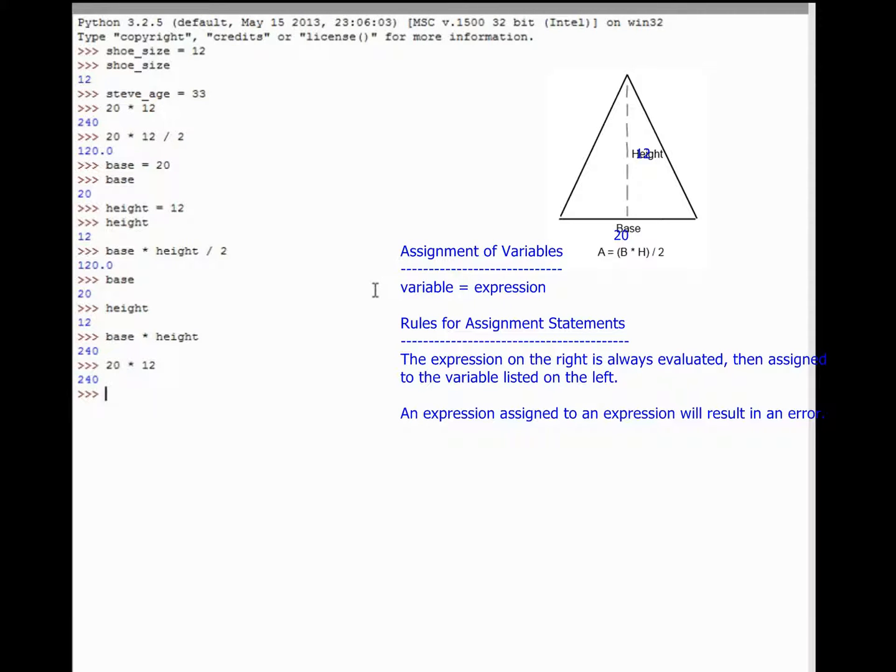What I can do is I can assign the result to a variable as well. I can say that the area of the triangle is equal to the base times the height divided by 2. In this case, Python doesn't return anything. In reality, what it did is it took base times height divided by 2 and assigned it to the variable area. But just like up at the top when we assigned base to equal 20 and height to equal 12, Python doesn't immediately return any information. When we assign a calculation to a variable, it won't immediately return any information. But if I type in area, Python will tell me that area is equal to 120.